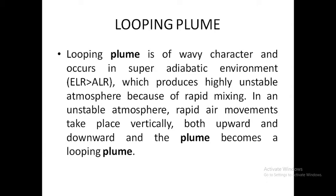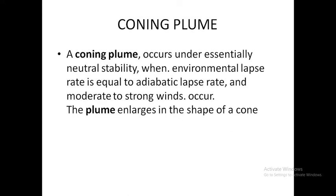Because of rapid mixing in an unstable atmosphere, rapid air movement takes place vertically — both upward and downward — and the flume becomes a looping flume. Second — coning flume: occurs under essentially neutral stability, where environmental lapse rate equals adiabatic lapse rate, with moderate to strong winds. The flume enlarges in the shape of a cone.